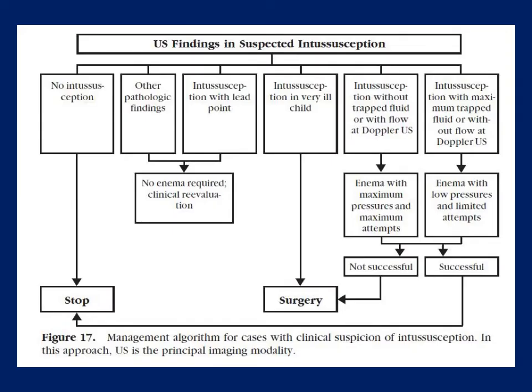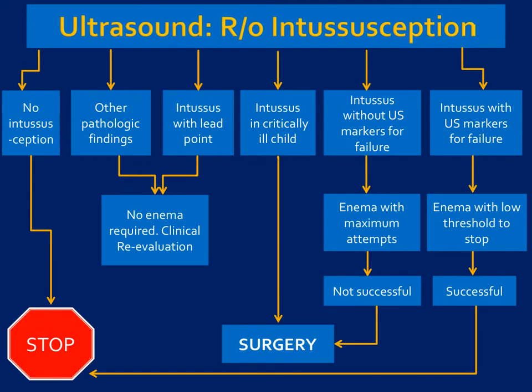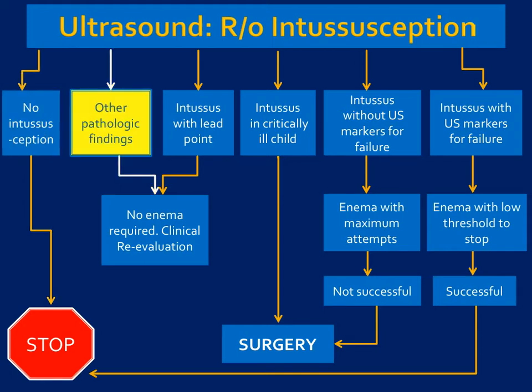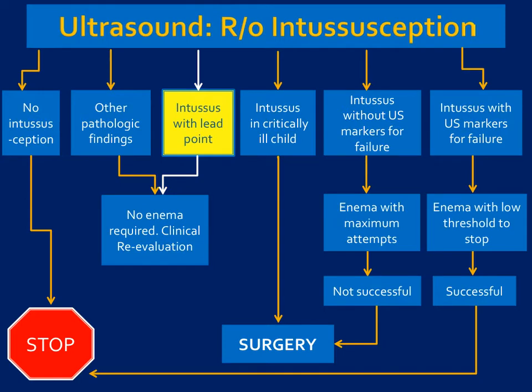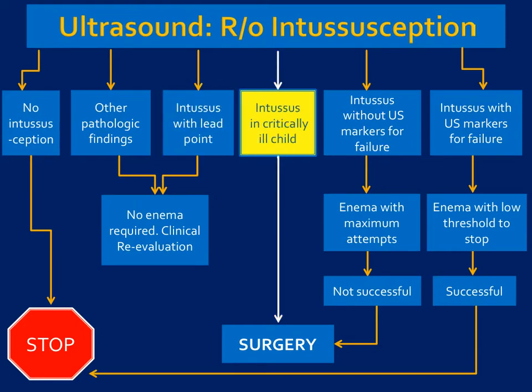There is an algorithm for treating intussusception. We begin with the ultrasound. If we see no intussusception, we're done — no contrast enema required. If we find other pathologic findings or a lead point such as lymphoma, no enema is required and clinical re-evaluation is needed. In intussusception in a critically ill child, the patient may go straight to surgery, though this is not commonly seen.